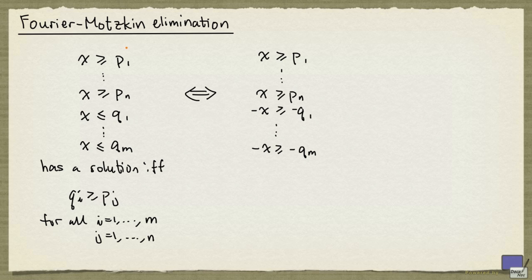Now if x does not appear on the right hand side, then this system here will not have the variable x. And that's the idea behind Fourier-Motzkin elimination.